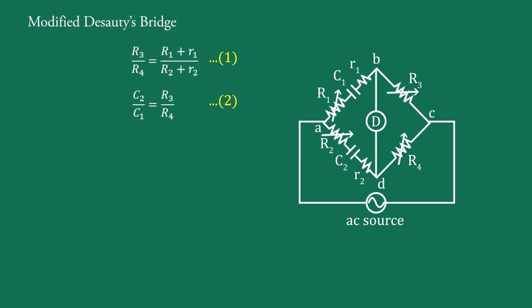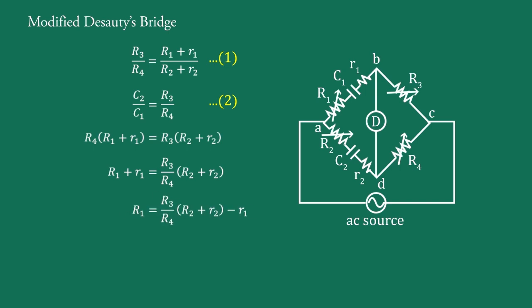From equation 1, making R1 the subject: R4 · (R1 + r1) equal to R3 · (R2 + r2), therefore R1 + r1 equal to (R3/R4) · (R2 + r2) — this is equation 3. From equation 2, C1 equal to (R4/R3) · C2 — this is equation 4.